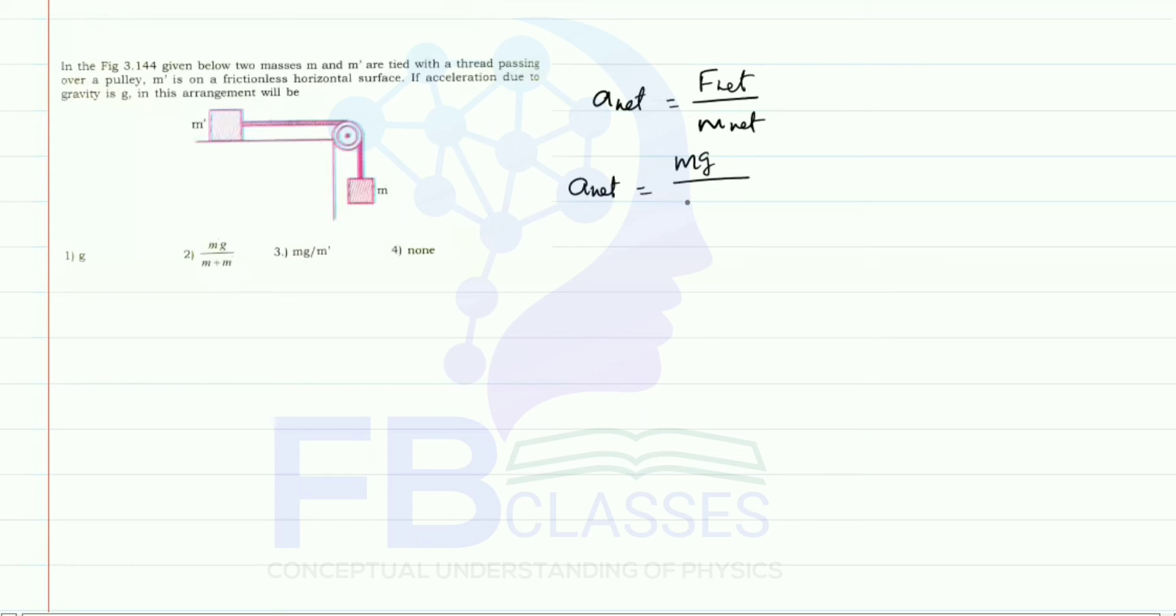Only mg will act downwards, so mg upon m_net, which is equal to small m plus m'. So he asked what is the acceleration: a_net is equal to mg divided by m plus m'. So the second option is correct.